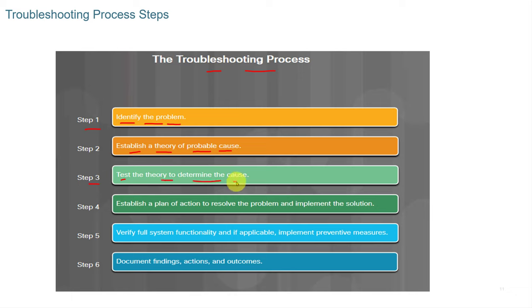Step four: establish a plan of action to resolve the problem and implement the solution. If the power cord was unplugged or a breaker was tripped, the plan might be to get an electrician or maintenance person to reset the breaker, or perhaps replace a UPS or a bad power strip. For example, recently a power strip went bad in my house and we had to replace it. Step five: verify full system functionality and, if applicable, implement preventative measures to make sure it doesn't happen again.